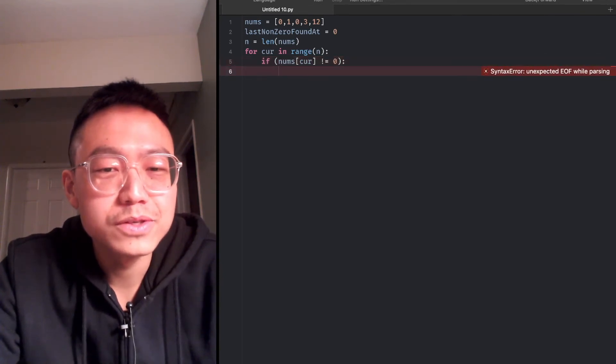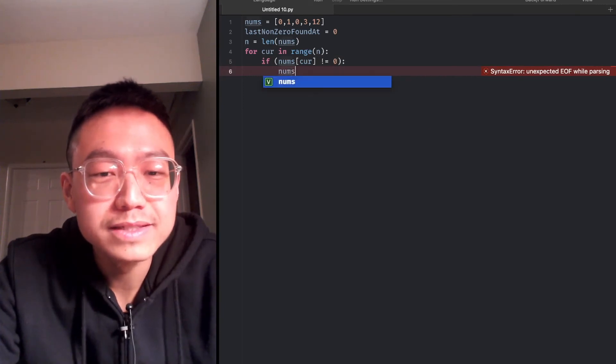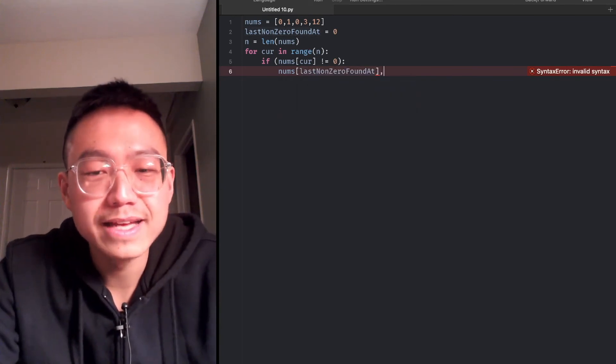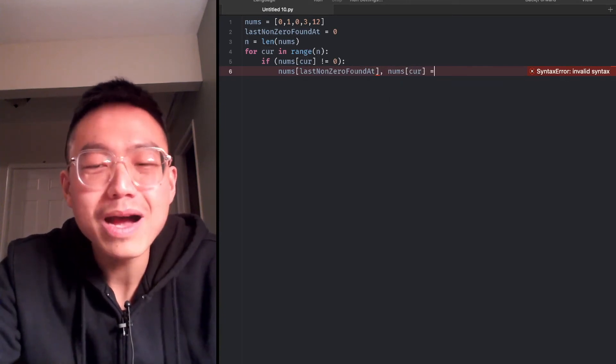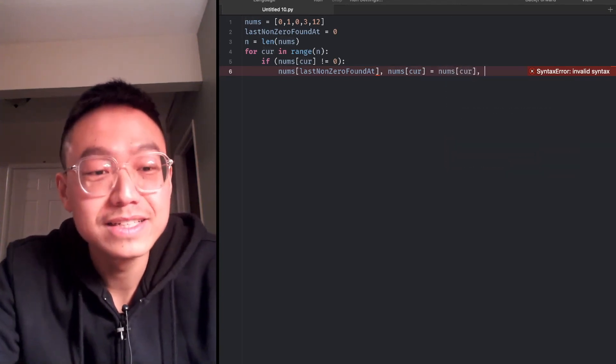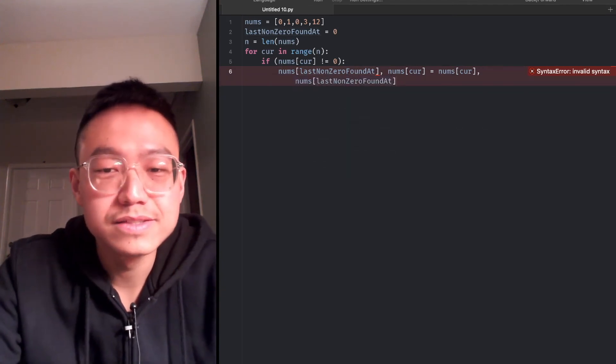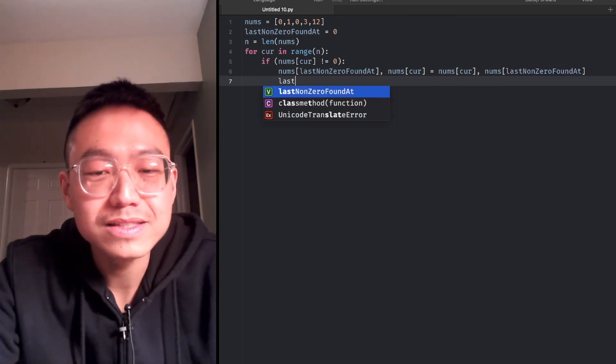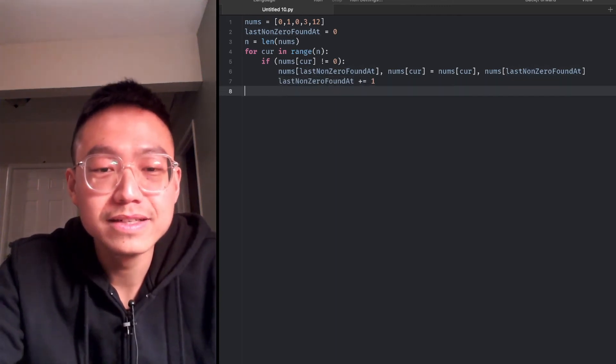Remember what we do here? We need to swap. Swap the element at nums at the slower pointer, lastNonZeroFoundAt, with nums at current. To swap the elements, nums at current and nums at lastNonZeroFoundAt. After swapping the value, lastNonZeroFoundAt is incremented by one. That's it.